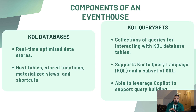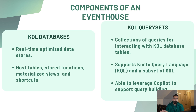Components of an Event House include a KQL database underneath — a real-time optimized data store that can host tables, functions, materialized views, and shortcuts. When you load real-time data to Event House, it goes into tables. You also get KQL query sets — collections of queries for interacting with KQL database tables — supporting both KQL and a subset of SQL. Copilot support is also available, where you ask questions and Copilot transforms them into KQL queries run against the database.